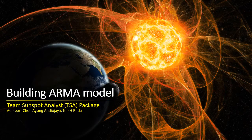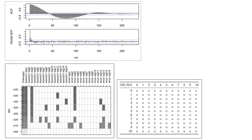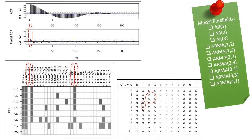Considering the data is stationary, we proceeded to fit an ARMA model. In this step, we are selecting ARMA model candidates that were specified through ACF, PACF, EACF, and BIC graphs. By investigating all of these graphs, we obtained 10 possible candidate models.